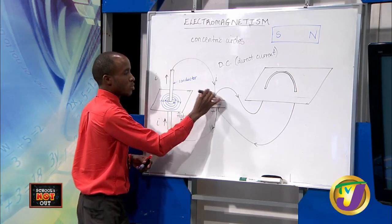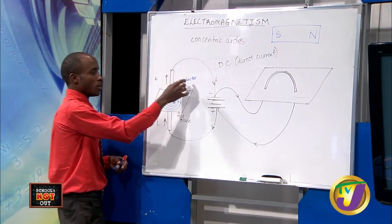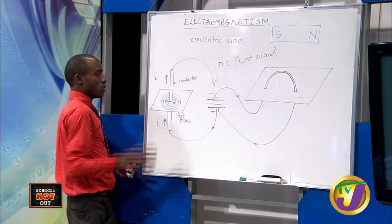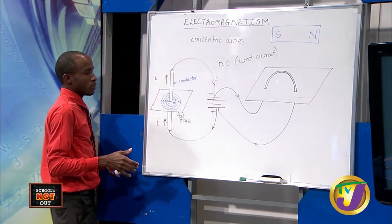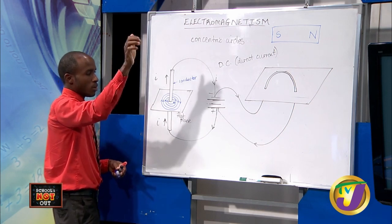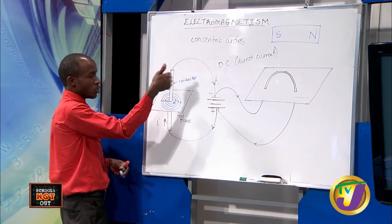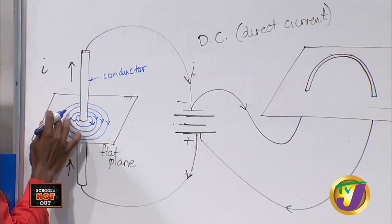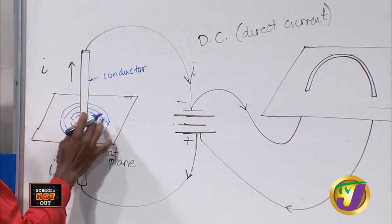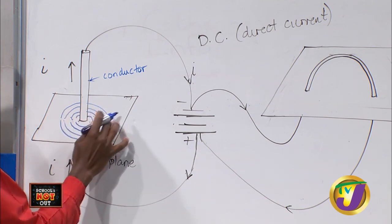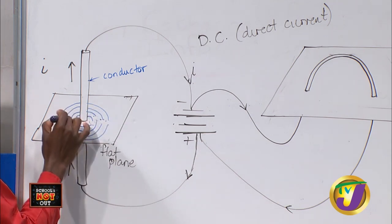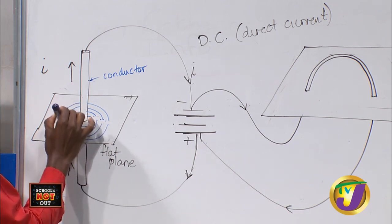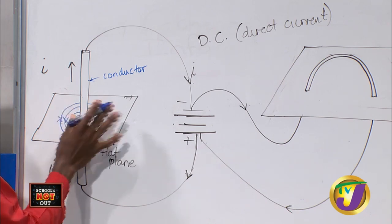We have switched this around, so the current that was going down is now heading up. Based on the right-hand grip rule, the field would now be going anti-clockwise instead. When it's going up like this, it comes around anti-clockwise.